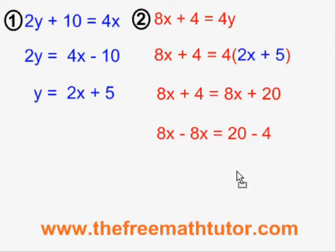The left side, 8x minus 8x cancels to 0. But on the right side, 20 minus 4 is 16. I end up with the nonsense statement, 0 equals 16.